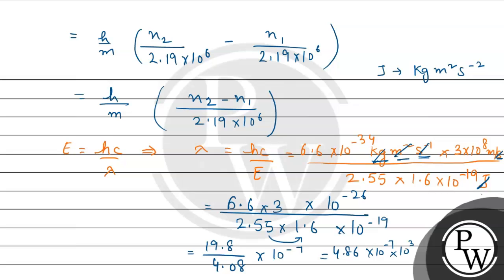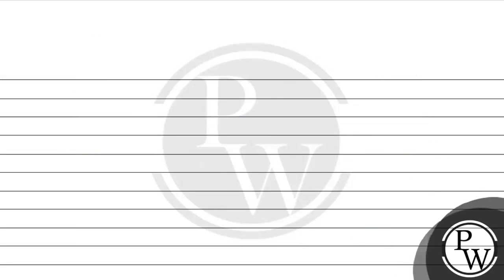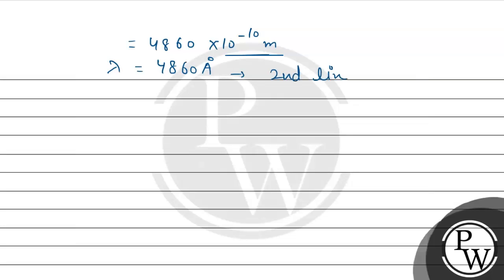Multiplying and dividing by 10³, we convert and get 4860 × 10⁻¹⁰ meters, which is 4860 Angstroms. This corresponds to the second line of the Balmer series.